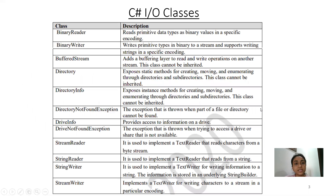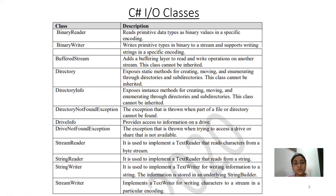Here you can see we have multiple C Sharp input output classes and their descriptions. First is Binary Reader — it reads the primitive data types and binary values in a specific encoding. Second is Binary Writer, which is used for writing purpose. Next is Buffered Stream, which adds a buffering layer to read and write operations. Next is Directory, which exposes static methods for creating, moving, and enumerating through directories and subdirectories.